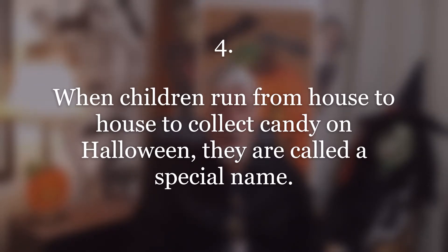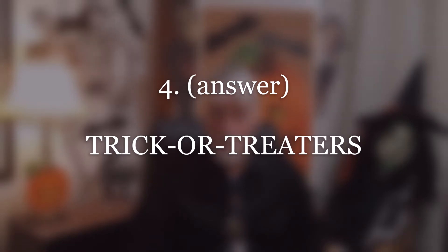Number four. When children run from house to house to collect candy on Halloween, they are called a special name — trick or treaters. The reason for that is because they say, trick or treat, give us something good to eat. A trick is when you play a joke against someone, and what they're saying is, if you don't give us candy, we're going to do some kind of a prank or a joke.